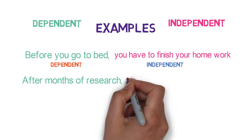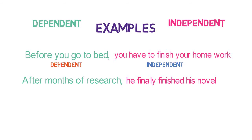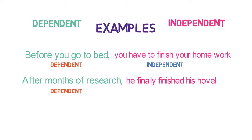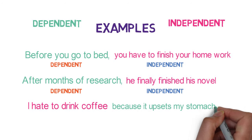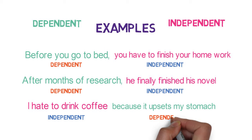'After a month of research, he finally finished his first novel.' Here, 'after a month of research' is a dependent clause, and 'he finally finished his novel' is an independent clause. One more example: 'I hate to drink coffee because it upsets my stomach.' Here, 'I hate to drink coffee' is an independent clause, while 'it upsets my stomach' is a dependent clause.